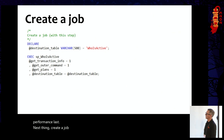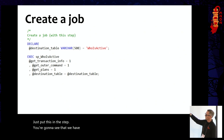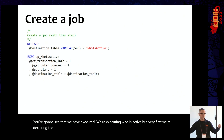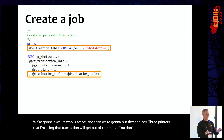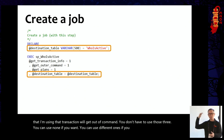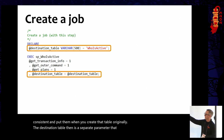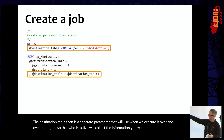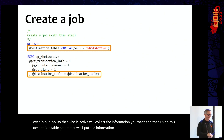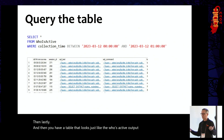Create a SQL Server Agent job and put the execution script in the job step. Declare the destination table, execute Who Is Active with the same parameters used when creating the table — get_transaction_info, get_outer_command, get_plans — and specify the destination_table parameter so Who Is Active inserts results directly into that table. Run it every five minutes or every minute as needed. The resulting table looks just like the Who Is Active output you'd see when running it live.